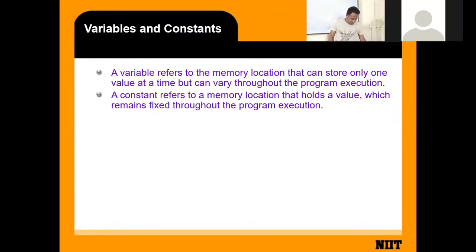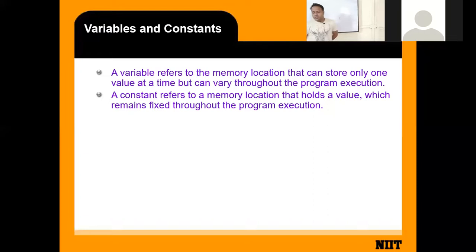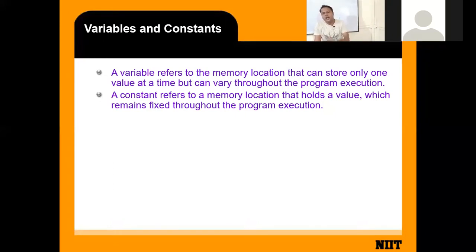A variable is a memory location where we store a value. Think of it like a bus destination — just as a seat may be allocated to a different city the next day, a variable refers to a memory location that can store only one value at a time, but that value can vary throughout program execution.